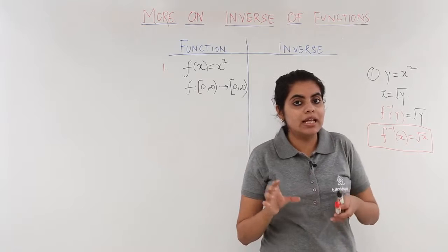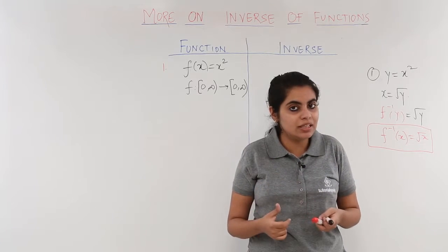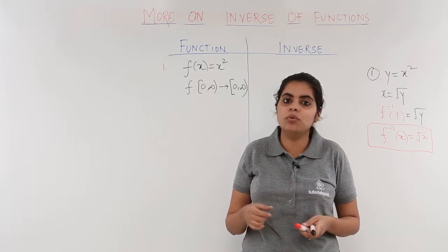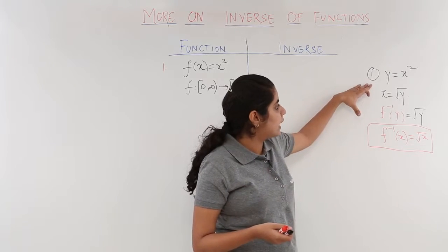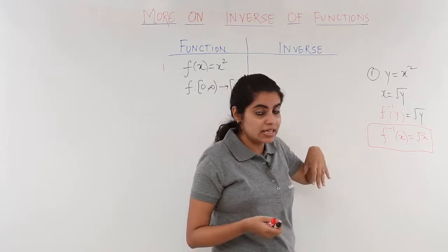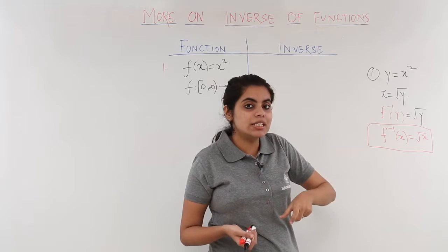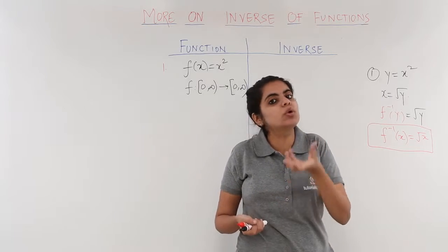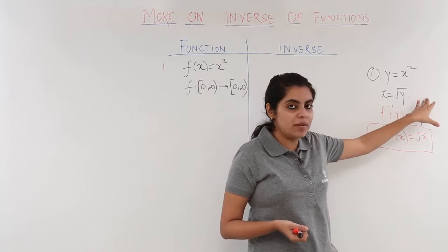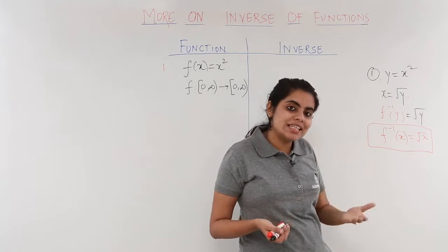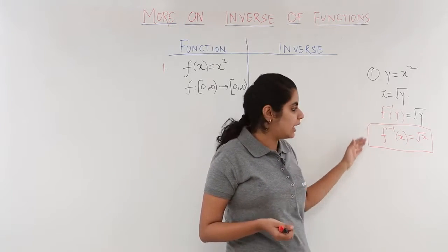So that's the technique to find the inverse. We substitute y with x in the last step. In the initial steps we compute the value of x, which here is √y, and x can always be replaced by f⁻¹(y).